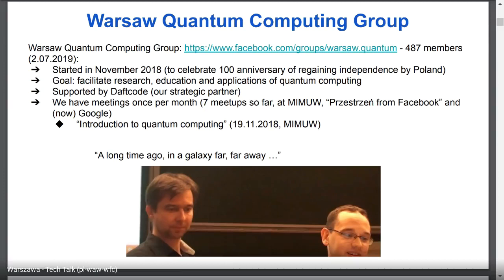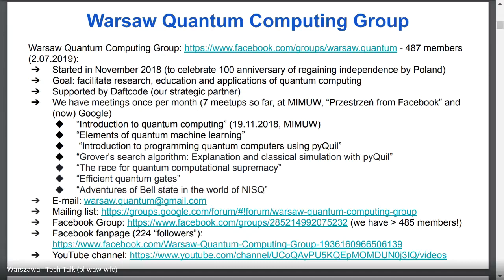We started to celebrate the 100th anniversary of Poland regaining independence, with the goal to facilitate research, education and applications of quantum computing, especially here in Poland. But we also record our meetings and make videos available on YouTube to educate people in other countries as well. Our strategic partner is DaftCode and we have meetings once per month. Meetings were held at the Faculty of Mathematics and Computer Science at the University of Warsaw, then at Facebook, and this is the first meeting here at Google. You can join our Facebook group — we have almost 500 members. We also have a mailing list, fan page and YouTube channel with video recordings.